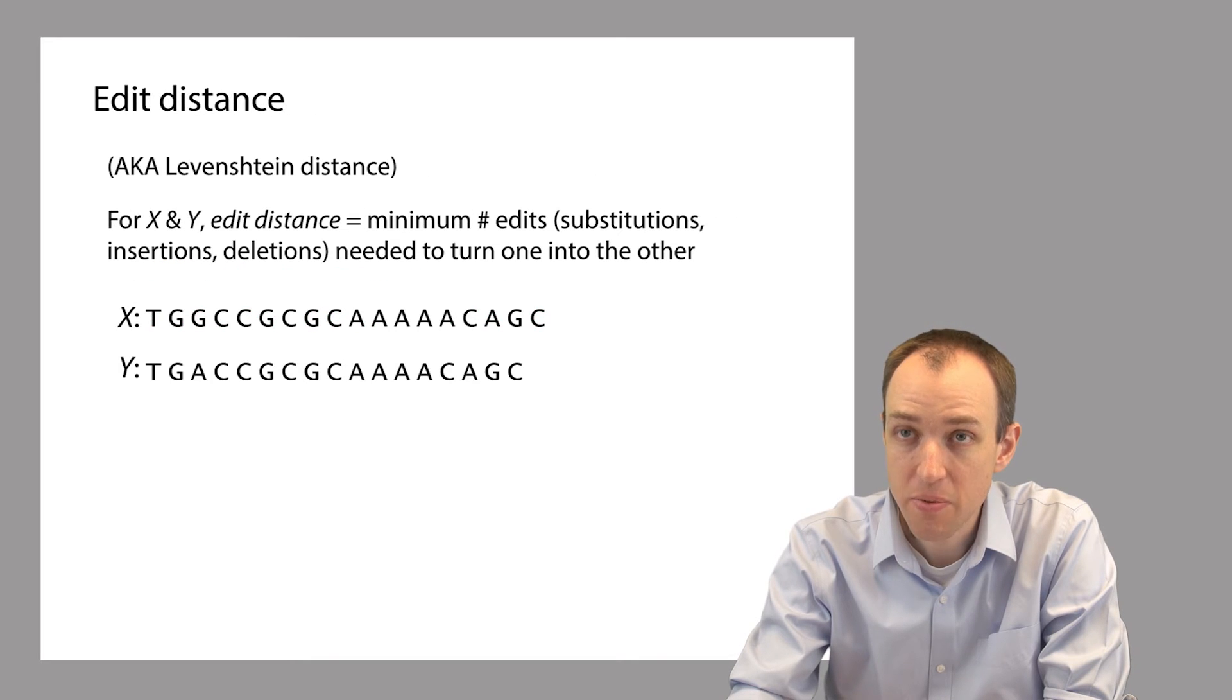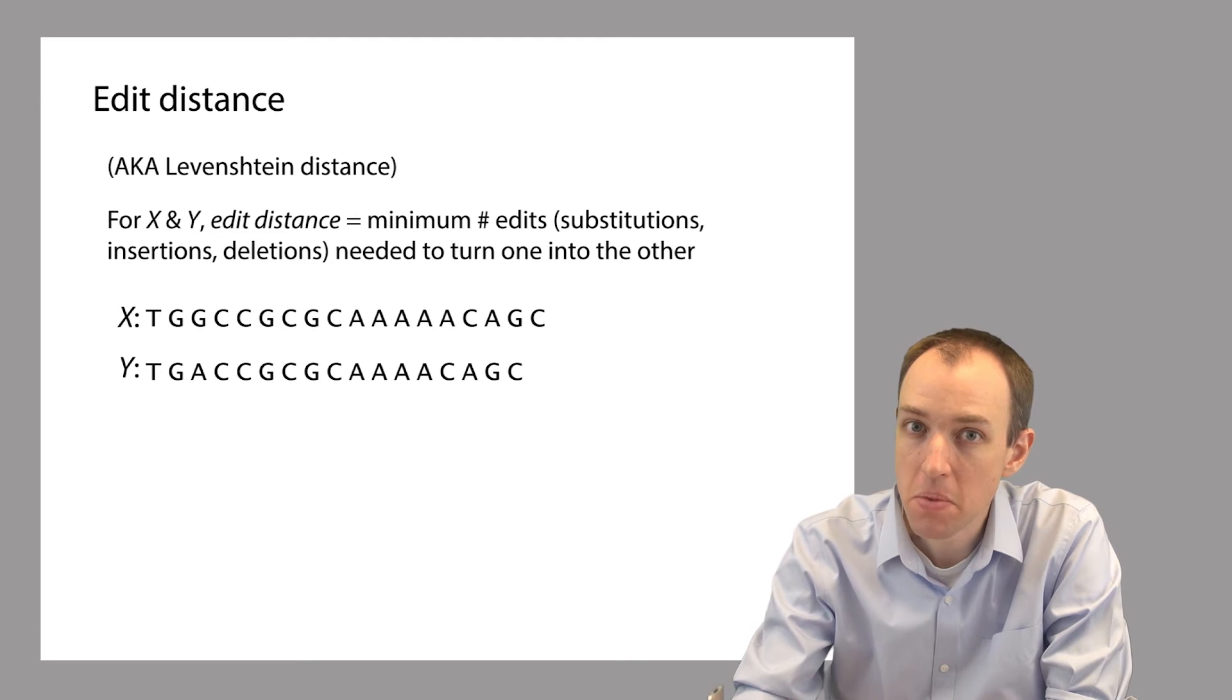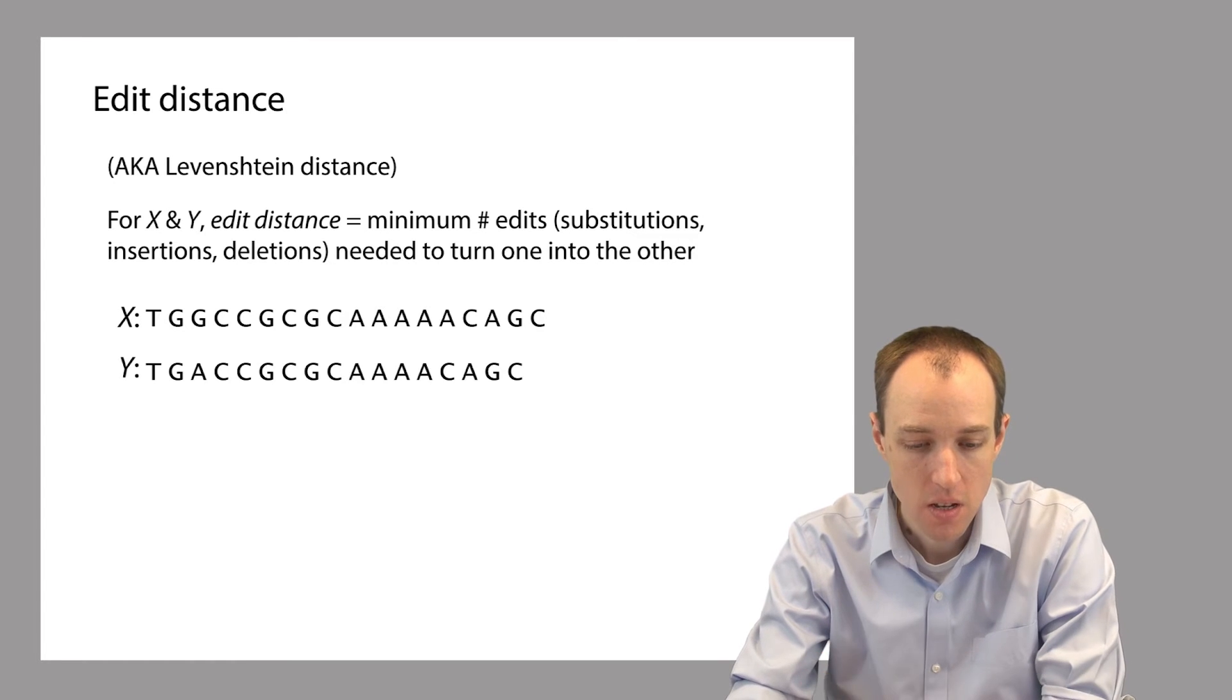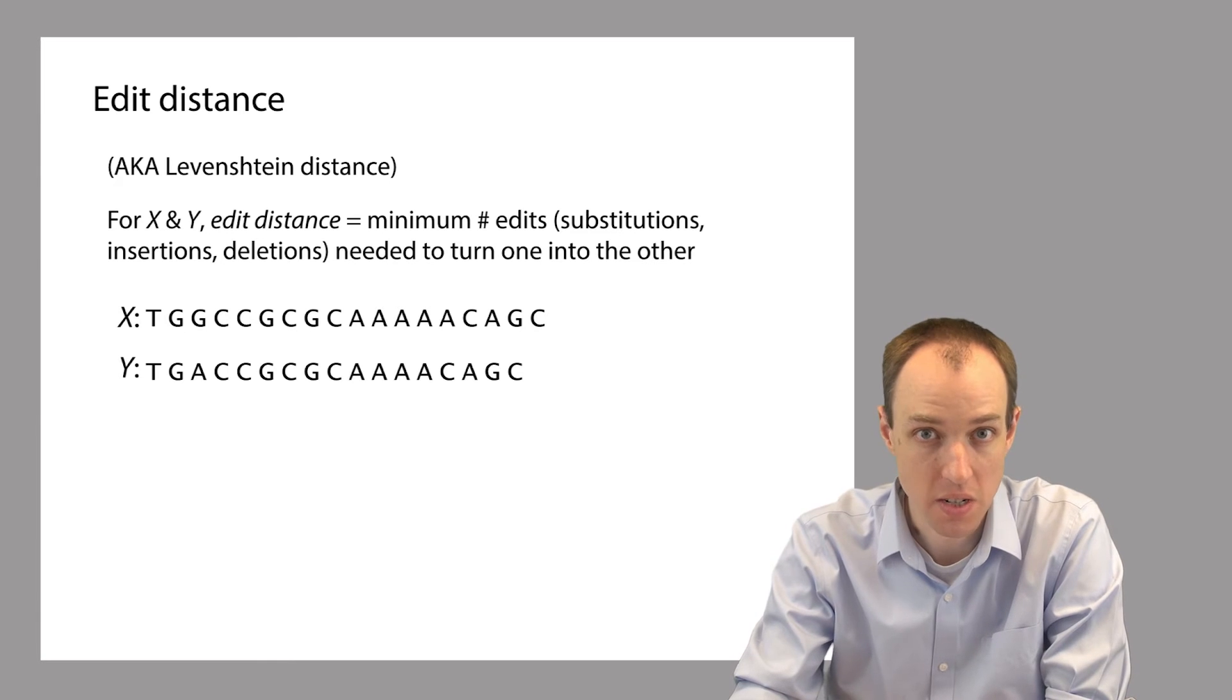Now here's a slightly different definition of distance. This is called edit distance, or sometimes it's called Levenshtein distance. The edit distance between two strings equals the minimal number of edits required to turn one string into the other, where a single edit could be a substitution or it could be an insertion or a deletion.